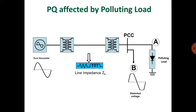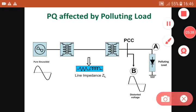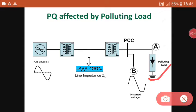Power quality is affected by polluting loads. A polluting load means a non-linear load — any power electronics converter is a type of polluting load because it injects harmonics into the system. The diode symbol in the load indicates a rectifier or power electronics converter. The input waveform is pure sinusoidal, but the output waveform is distorted — this is the effect of a polluting load.